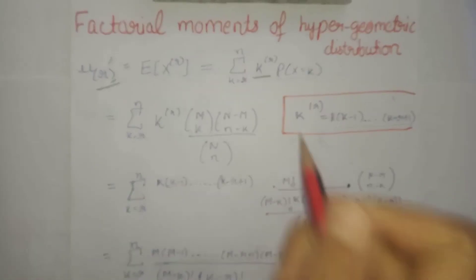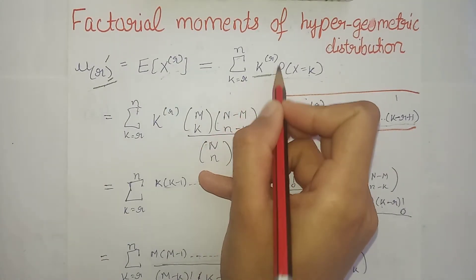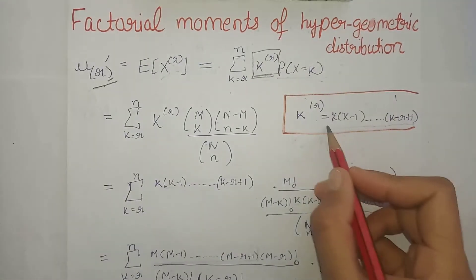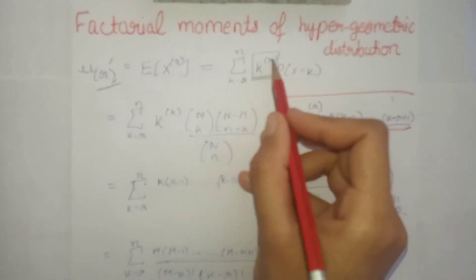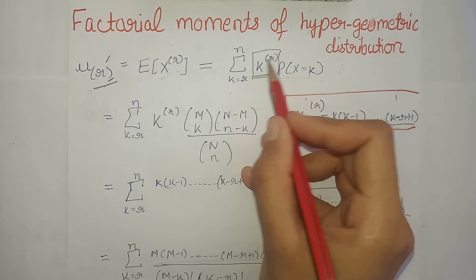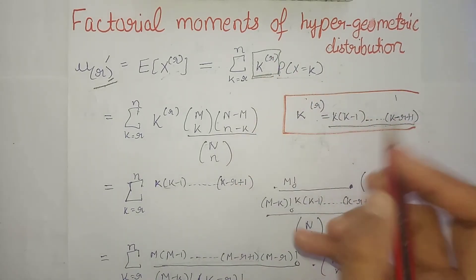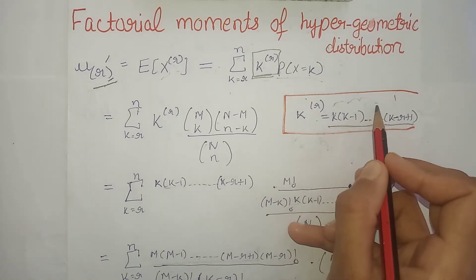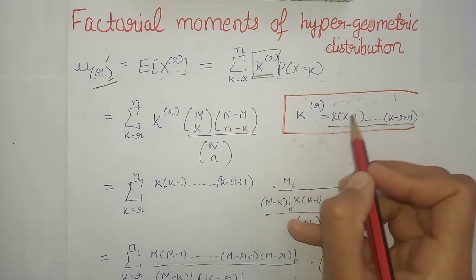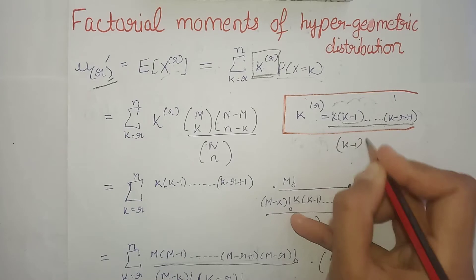Now see here, we started k values from r because actually the meaning of this term is that k minus r factorial and all previous terms - that is the answer. See, in factorial if we go one step ahead we subtract one one, that means if we go one step back we add one one.